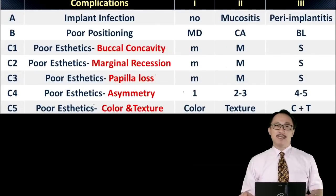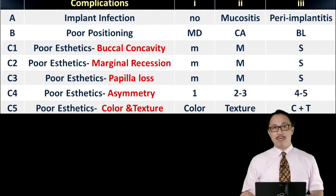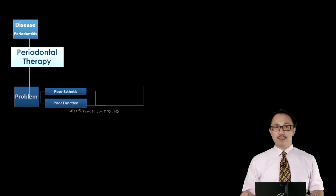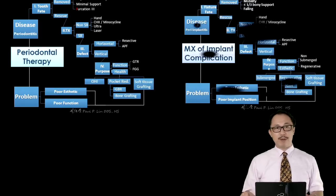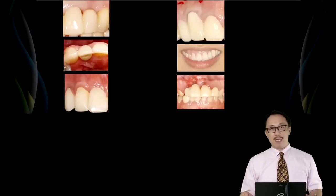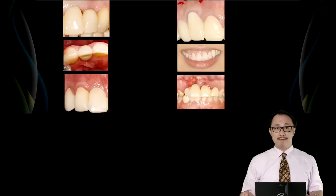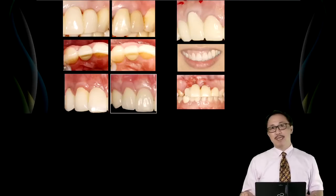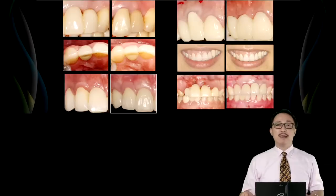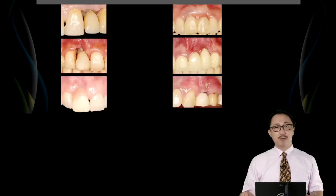To correct the implant complication, I categorize into seven categories, and also utilize a procedure similar to paranormal therapy to manage the implant complication. With proper case selection, patient selection, and procedure selection, you will be able to achieve management of complication by soft tissue in a predictable way.